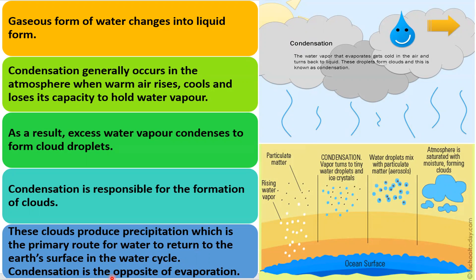Condensation is the opposite of evaporation. In evaporation, water changes into gaseous form; in condensation, water vapor converts back into water. The water vapor that evaporates gets cooled in the air and turns back to liquid. These droplets form clouds, and this process is known as condensation.